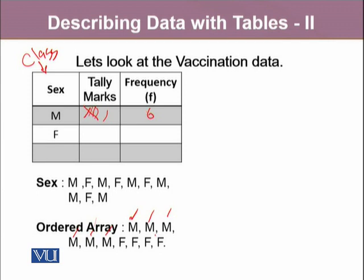Similarly, for female, there are four females, so you will note down four tallies — one, two, three, four — and then note down their frequency. We can always total the frequency, and in this case it is 10, which is also called sum of f, which equals the number of observations in our sample.